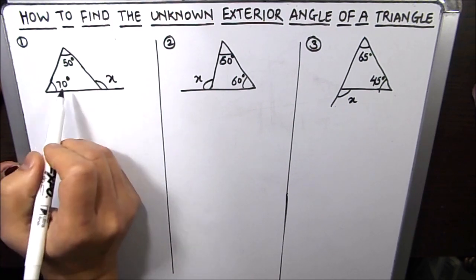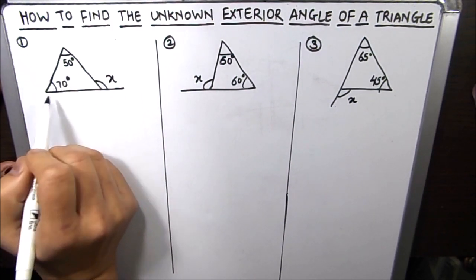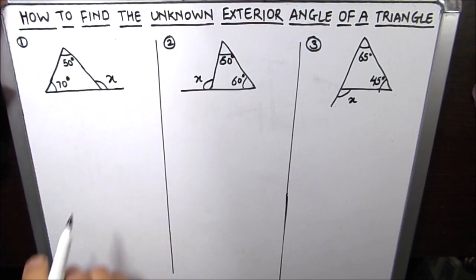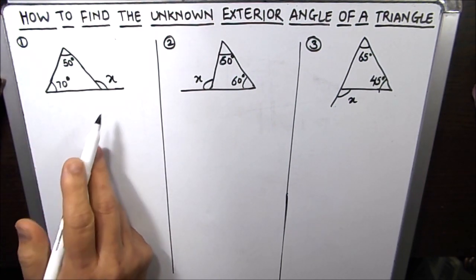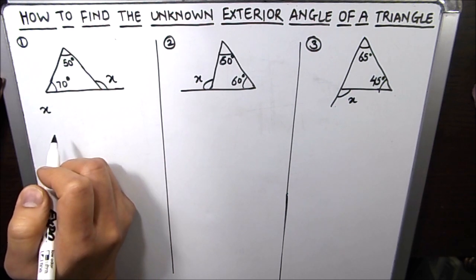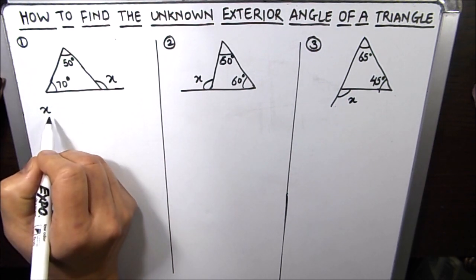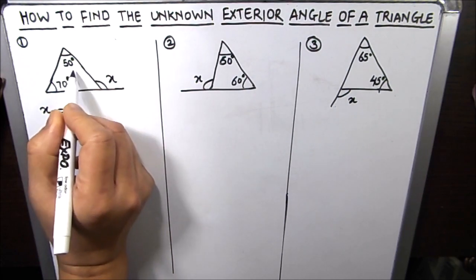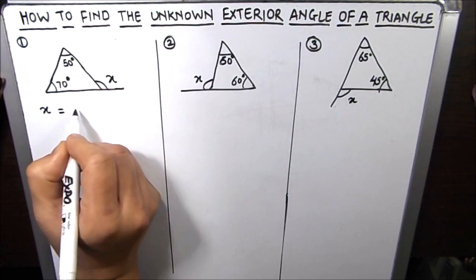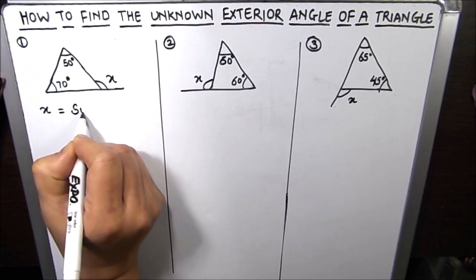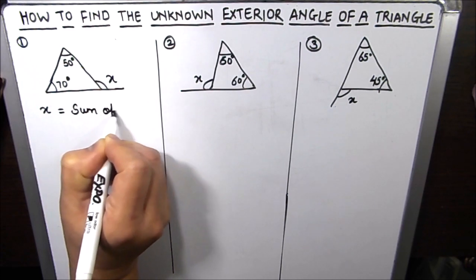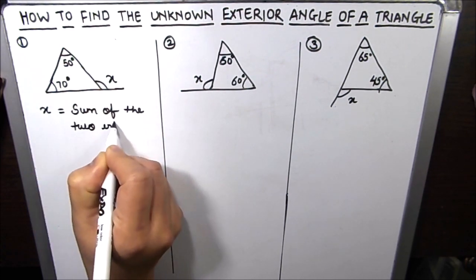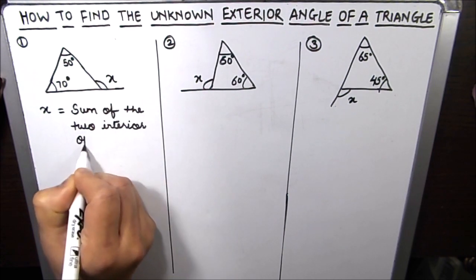The first one here is given a triangle where two angles of a triangle have been given. We need to find the exterior angle x. According to a theorem, the exterior angle of any triangle is equal to the sum of the two interior opposite angles.